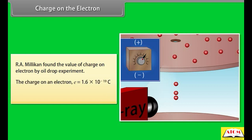Thus, the charge on an electron e is equal to 1.6 × 10⁻¹⁹ coulombs. The mass of the electron mₑ is equal to 9.31 × 10⁻³¹ kilograms.